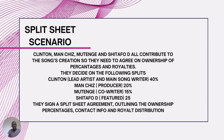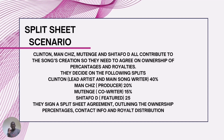Clinton, Manches, Mutenge, and Shida 40 all contributed to the song's creation, so they need to agree on ownership percentages and royalties. They decide on the following splits: Clinton, the lead artist and main songwriter, gets 40 percent; Manches the producer gets 20 percent; the co-writer gets 15 percent; and Shida 40, the featured artist, walks away with 25 percent — totaling 100 percent. They sign a spreadsheet agreement outlining ownership percentages, contact info, royalties, and other essential elements.